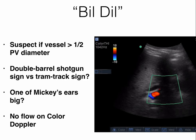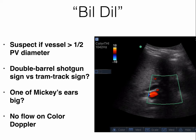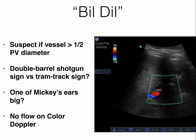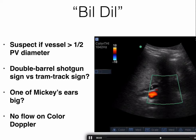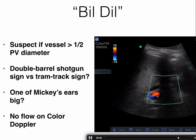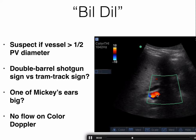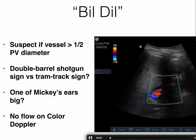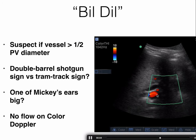If you do have biliary dilation, suspect it if the bile duct is greater than half the portal vein diameter. Sometimes on long axis it will look like two large vessels side by side — like a double barrel shotgun or a tram track. In the short axis, it will look like one of Mickey's ears is bigger than the other. To confirm, use color Doppler — if the vessel has no flow and it's dilated, that's your bile duct.